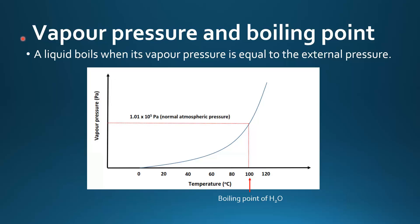Next we'll look at the relationship between vapor pressure and boiling point. A liquid boils when its vapor pressure is equal to the external or atmospheric pressure. The rise in vapor pressure with increasing temperature is not linear but exponential — it increases more at higher temperatures. At normal atmospheric pressure, the boiling point of water is 100 degrees C.